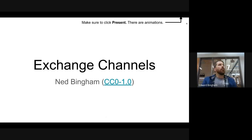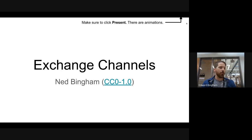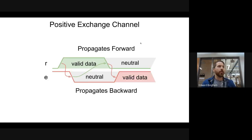Today's lecture 19 will cover exchange channels. These channels pass data both forward through the requests and backwards through the enables or acknowledge. The requests ultimately drive the exchange, so if there are no requests, the data traversing in the backward direction stays put. It's effectively a state-holding protocol. There are two types of exchange channels: positive and negative.